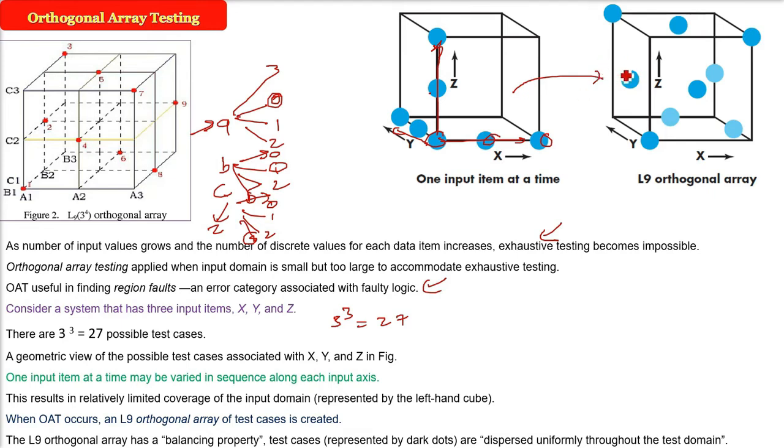When OAT occurs, an L9 orthogonal array of test cases is created. The L9 orthogonal array has a balancing property, and these test cases are represented by dark dots.